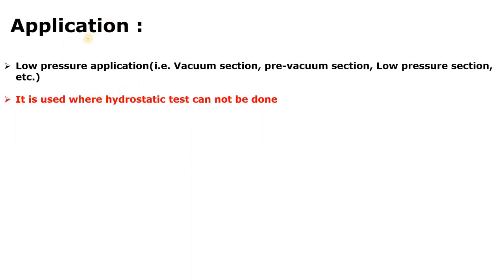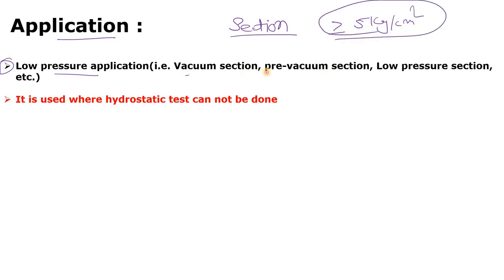Now, what are the applications of the pneumatic test? It is mainly performed where low pressure applications exist — like in vacuum sections or pre-vacuum low pressure sections. We may also use the pneumatic test where the hydrostatic test cannot be done, or sometimes due to time constraints, though ideally we should not skip the required test before startup. We should not skip any test before startup since it is very important to find out leakage.